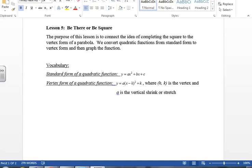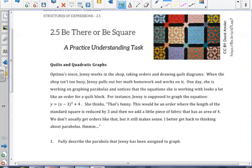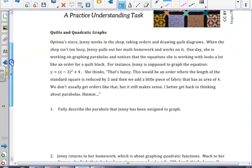Through this lesson, we will also use the vertex and the a value to help us graph the parabolas. In this lesson, we are told that Optima's niece, Jenny, works in the quilt shop, and when the shop isn't too busy, she takes out her math homework and works on it. One day, Jenny was working on graphing parabolas. The equation provided to her was y equals the quantity x minus 3 squared plus 4. She realized that this equation looked very similar to the quilt orders, but that the side length of a standard square was reduced by 3, and she had to add a little piece of fabric that had an area of 4.